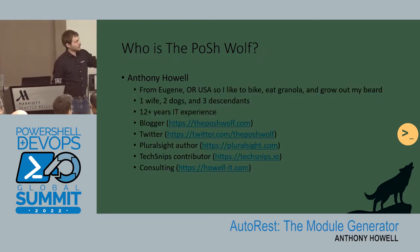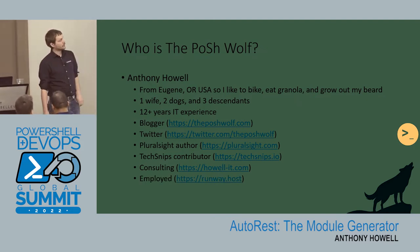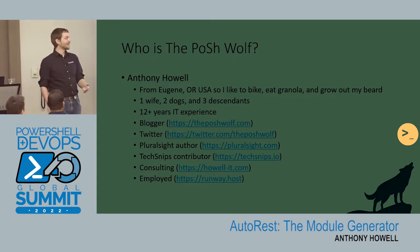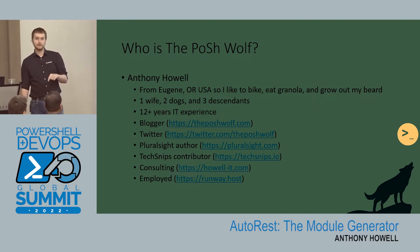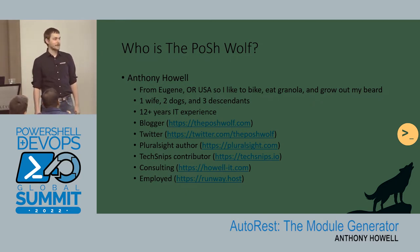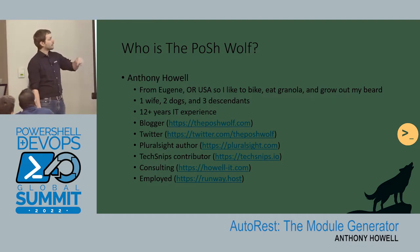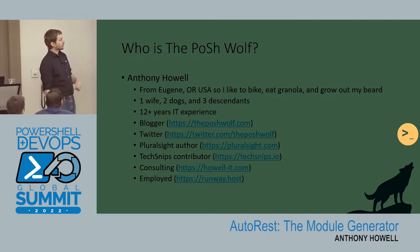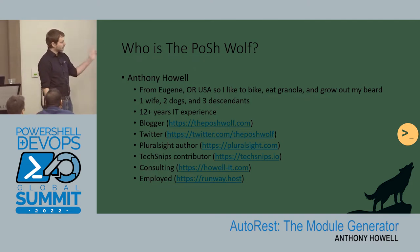So I'm Anthony, that's my real name. I'm from Eugene, Oregon, so I like to bike, eat granola, grow my beard. I also figured out the hard way that you can get pulled over on a bicycle — I ran a stop sign and got pulled over. I've got a wife, two dogs, three descendants. I've been in IT for a long time, I blog, I tweet sometimes, I've done a portal site course, I'm on Tech Snips, I do some consulting on the side.